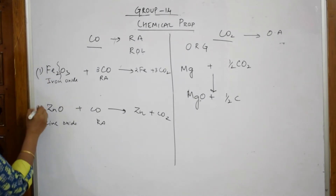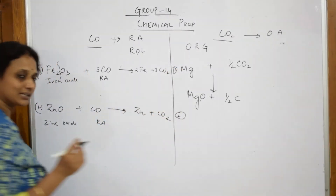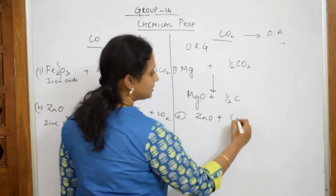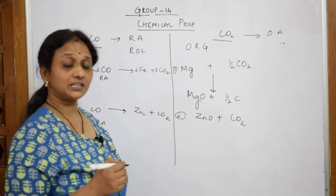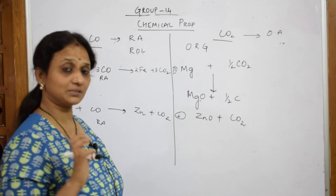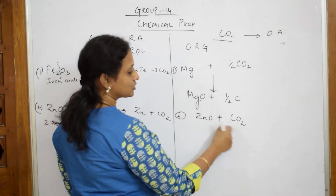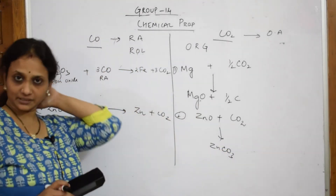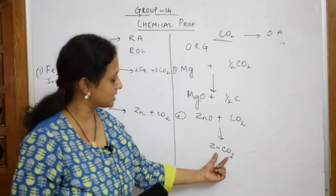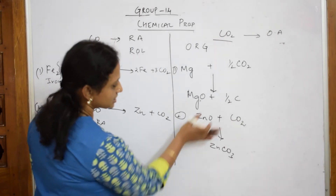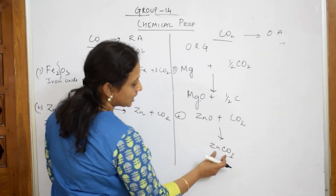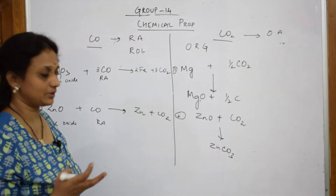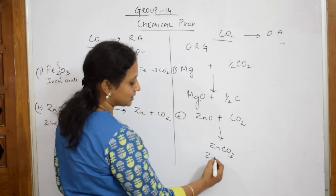Now let us do the next chemical property. I am going to take zinc oxide and add carbon dioxide. Zinc oxide and carbon dioxide form a completely addition product — zinc carbonate, ZnCO₃. Going in the reverse direction, zinc carbonate undergoes thermal decomposition on heating and breaks up into zinc oxide plus carbon dioxide.